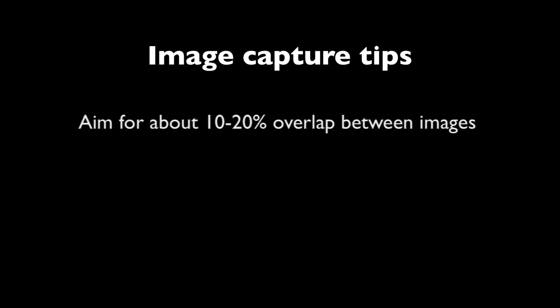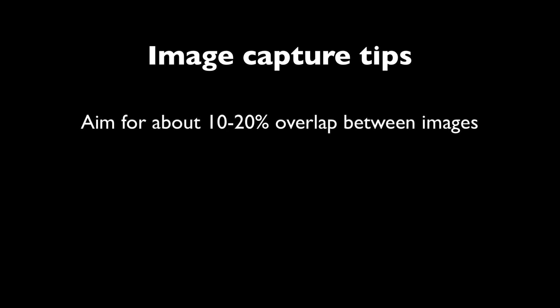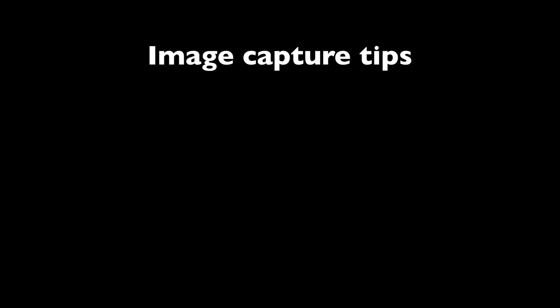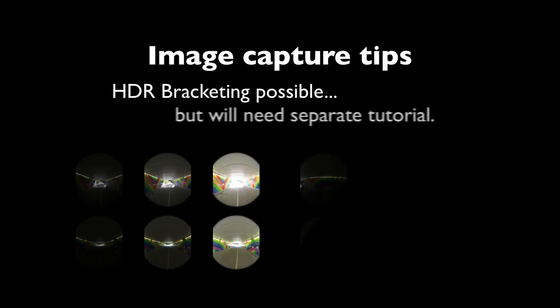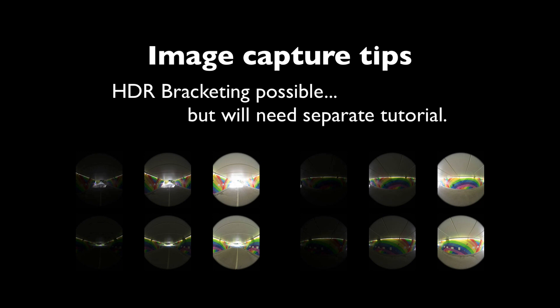When you're shooting the images, try to have about 10 to 20% overlap between the different frames. This will give PTGUI a good chance to figure out how these images are laid out relative to each other and what sort of lens was used. And you might also shoot HDR brackets — different exposure levels. But this is a big topic and we'll treat it later in a separate tutorial.